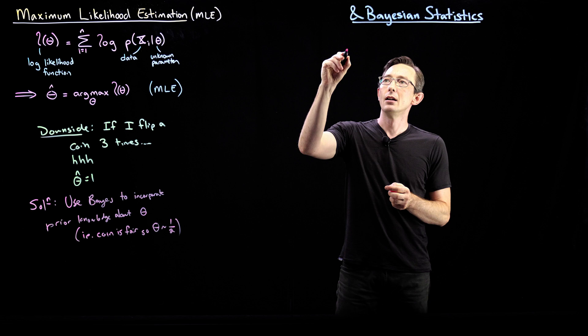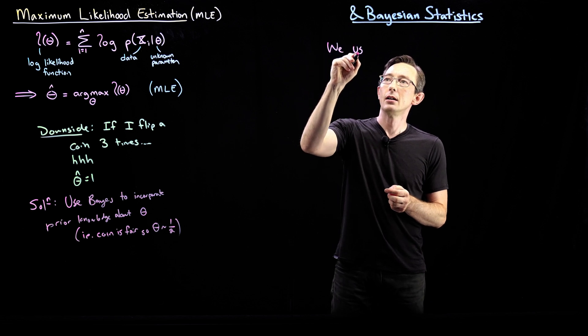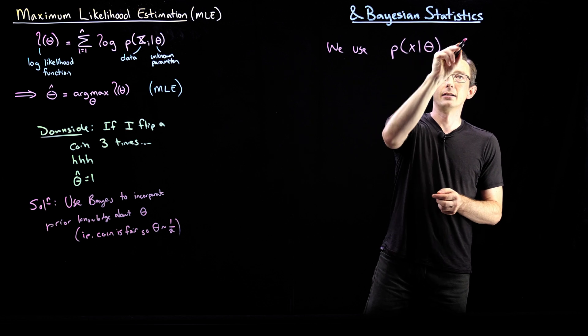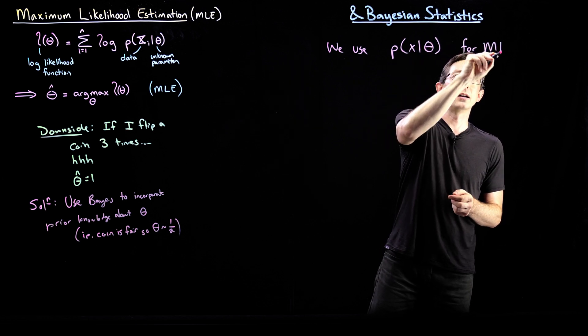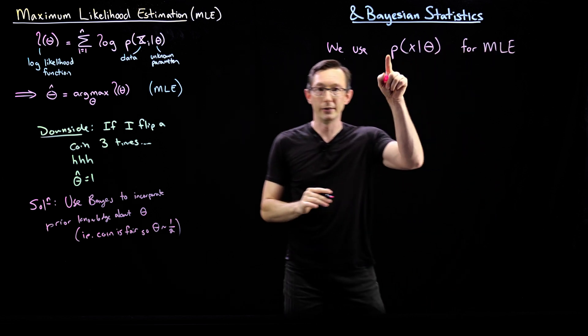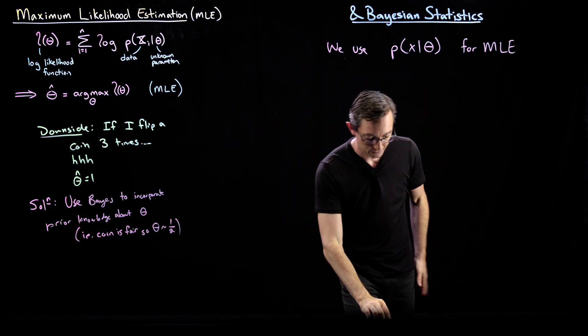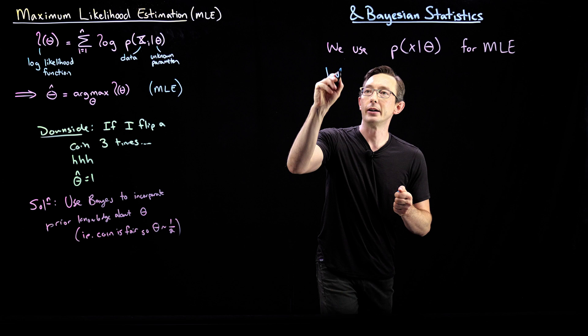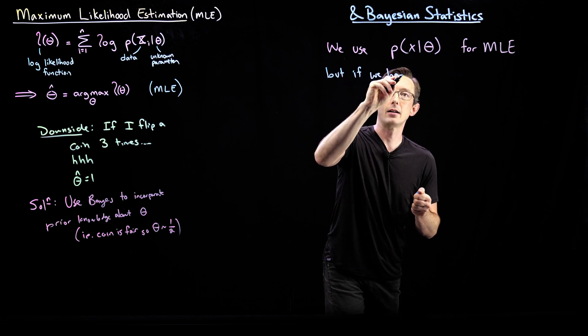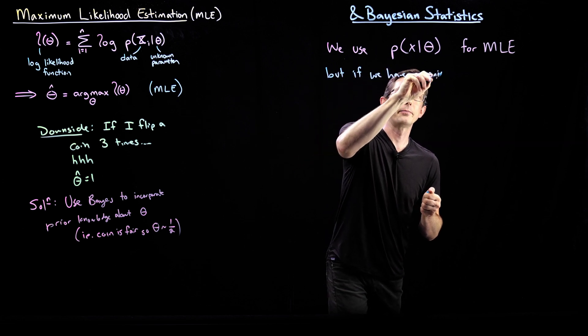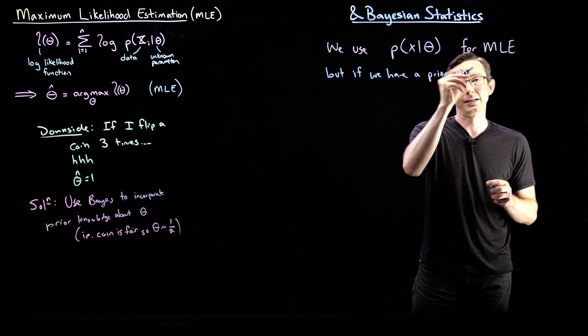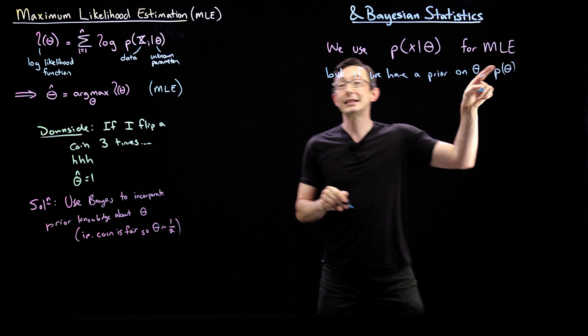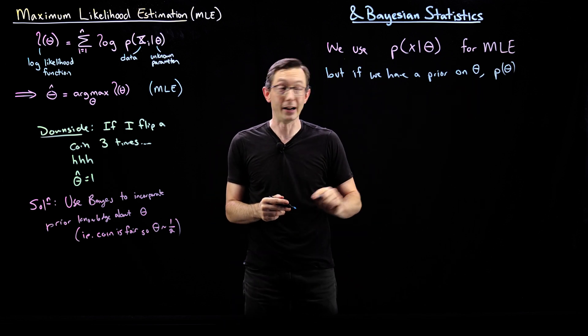So in MLE, we use the probability of X given theta for MLE. We use the probability of X given theta. We've talked about this a lot. But if we have prior knowledge, a prior on theta, sometimes we just say a prior on theta, P(θ), this is a distribution of what I think theta is distributed as.